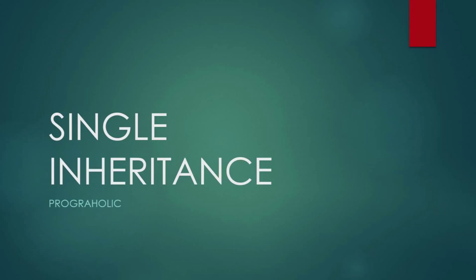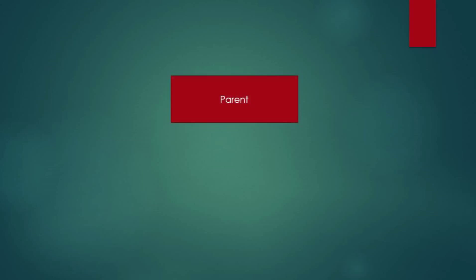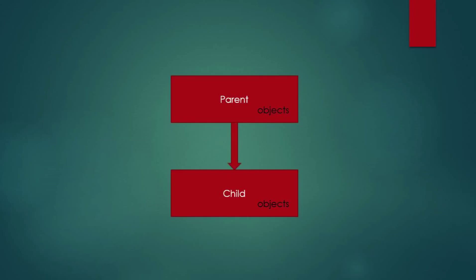Let us see an example. Here we have a parent class and a subclass which is called child class. Remember that there are only two classes involved in the case of single inheritance. In each and every class they have their own set of objects, which are variables and methods. In inheritance, the parent class gives the child class access to its objects, so the child class has access to every object of the parent class, and the objects of the child class can call objects of the parent class. In this case we use the extends keyword, which I will explain when we write the program.